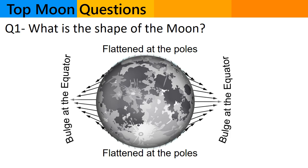It is slightly flattened at the poles and bulging at the equator. Bulge near its equator caused by its rotation.